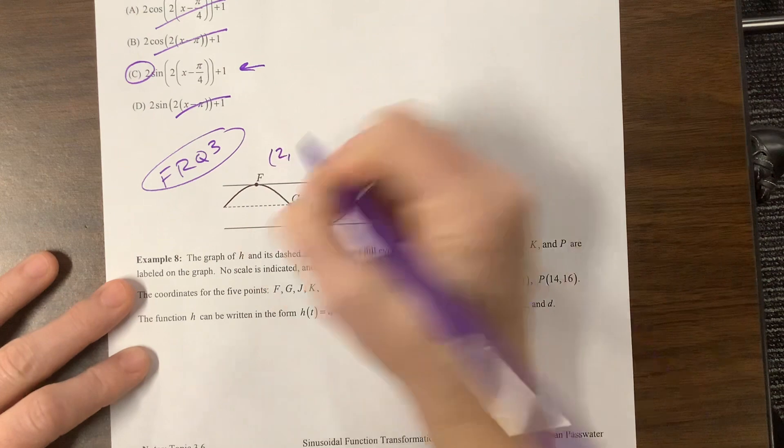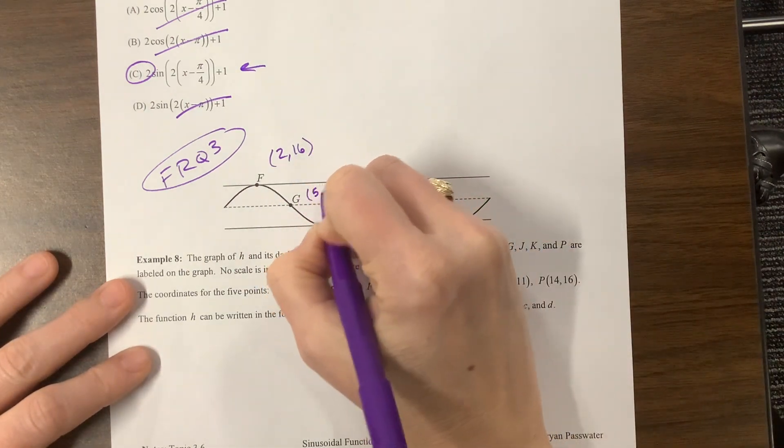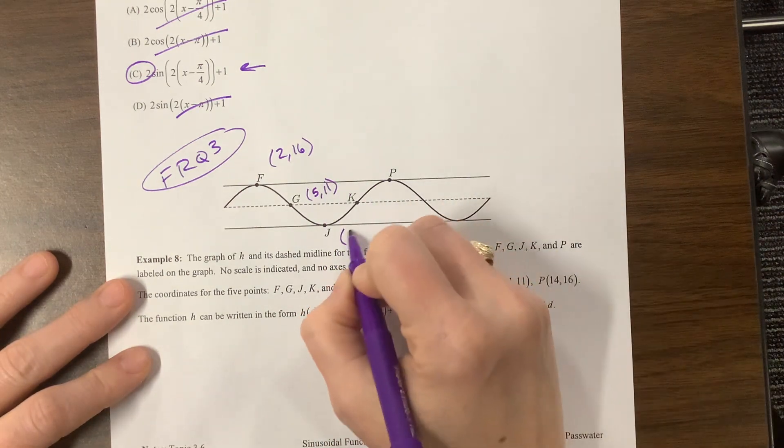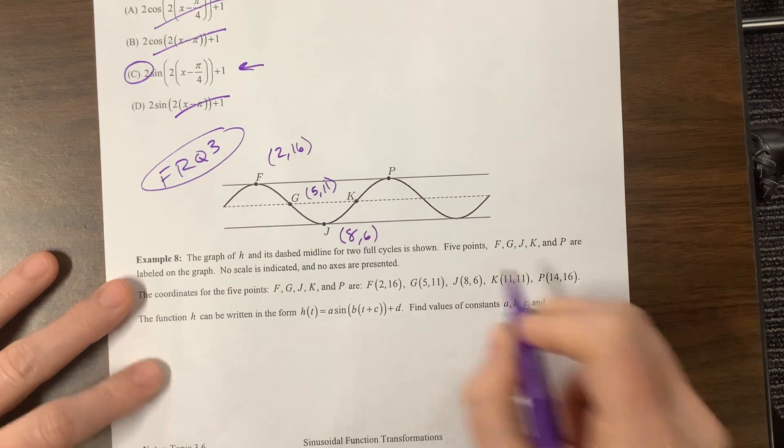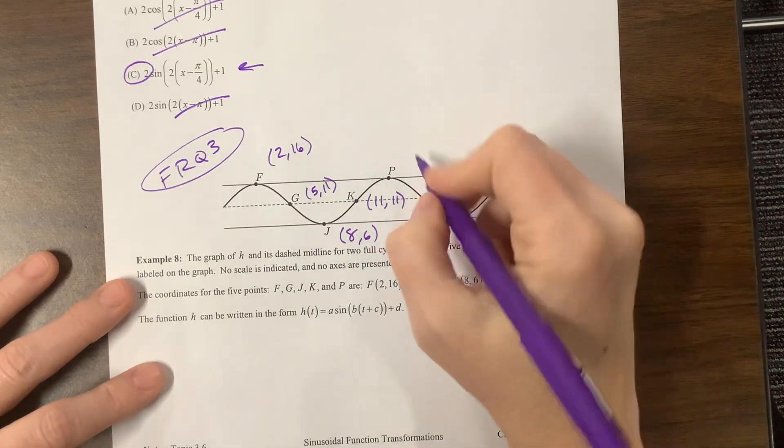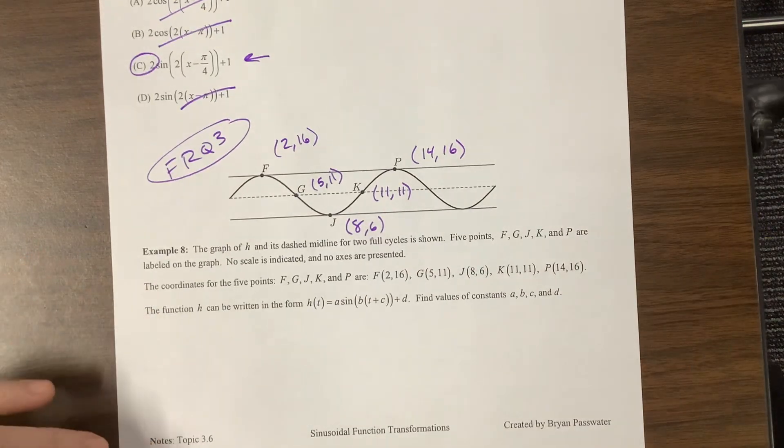F, they're saying is the point 2, 16, and G, they're saying is 5, 11. That's my brother's birthday. And J is 8, 6, and K is 11, 11. That has nothing to do with my birthday. I always put 6, 17 in all my problems, which is my birthday. So here are the points.